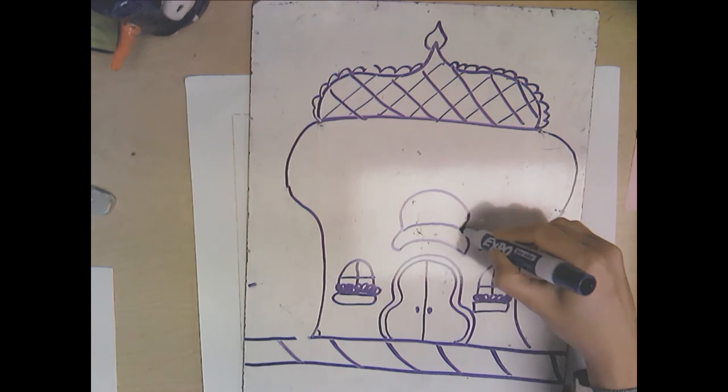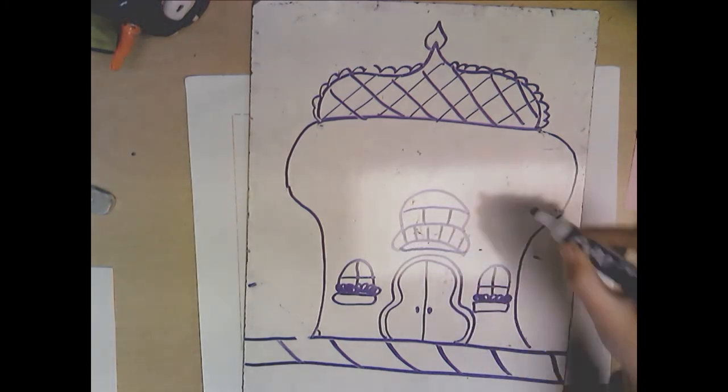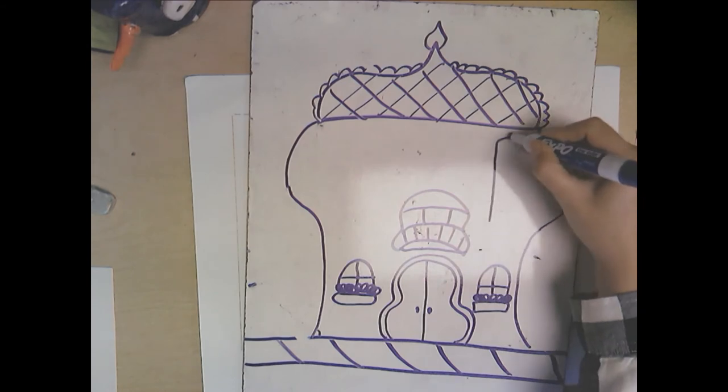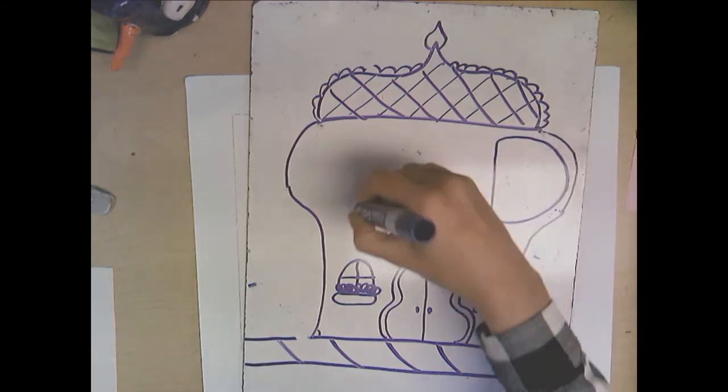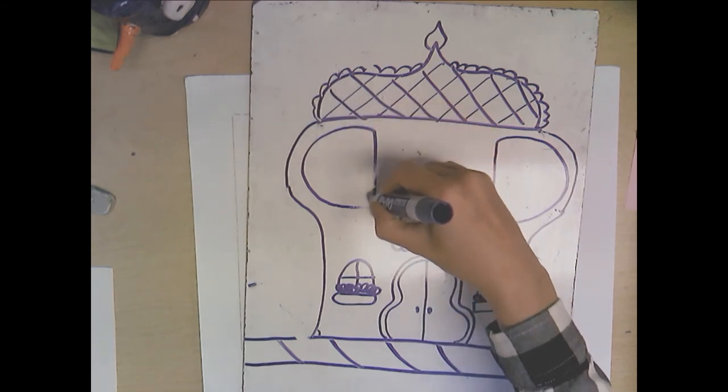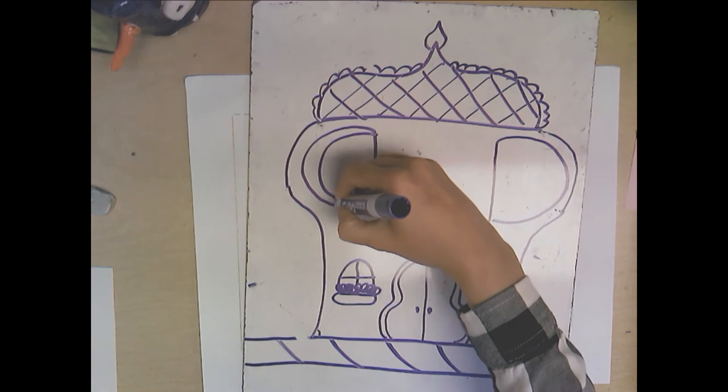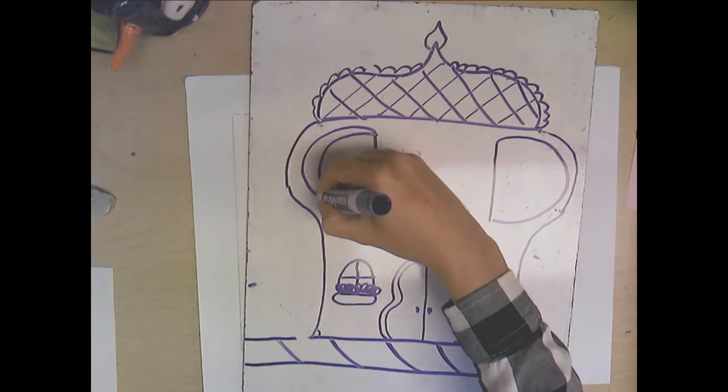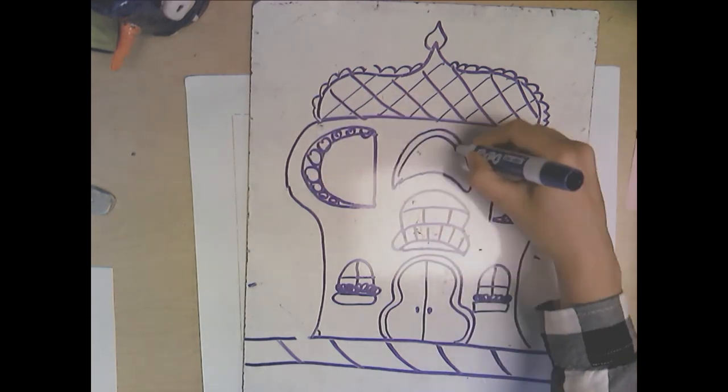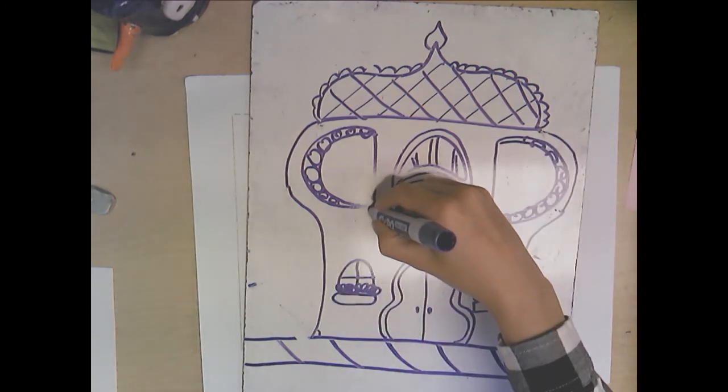Maybe he has a window, a balcony. Maybe these windows follow the curve of the building. Maybe they have patterns on them.